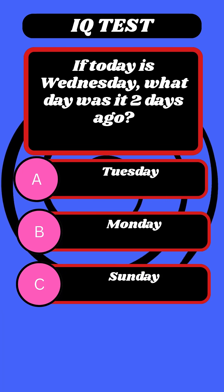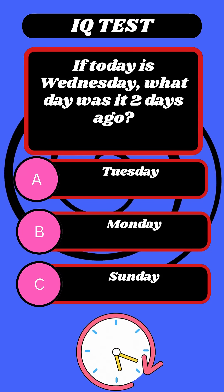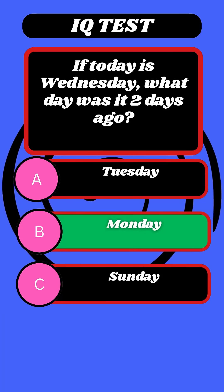Question 4. Day riddle. If today is Wednesday, what day was it two days ago? Think. Answer. Monday.